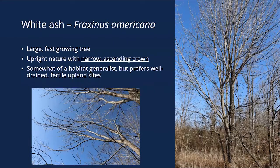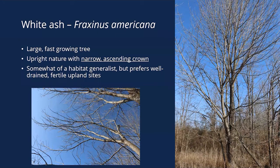White ash is a large, fast-growing, upright tree with a narrow ascending crown. It's somewhat of a habitat generalist but prefers well-drained upland soils — you tend to find it in drier sites compared to green ash, which prefers wetter sites, though they often grow right next to each other.